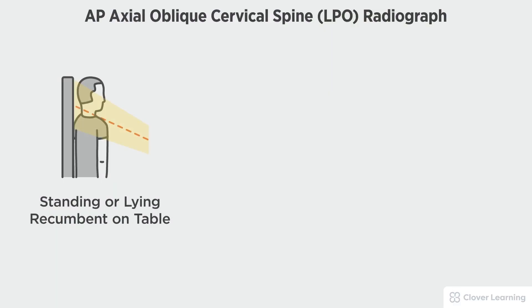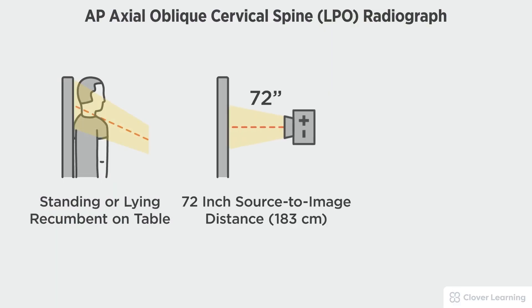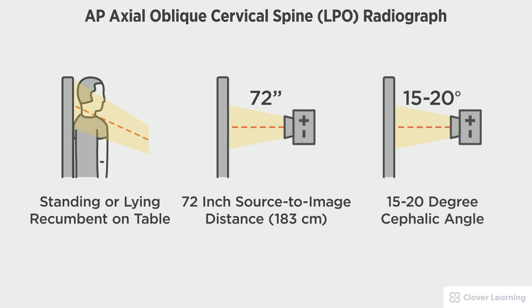In this view we will be demonstrating the AP axial cervical spine left posterior oblique, an LPO. The AP axial oblique cervical spine LPO view should be performed with the patient standing at the upright bucky or lying on the table, with a 72 inch source to image distance and a 15 to 20 degree cephalic tube angulation.